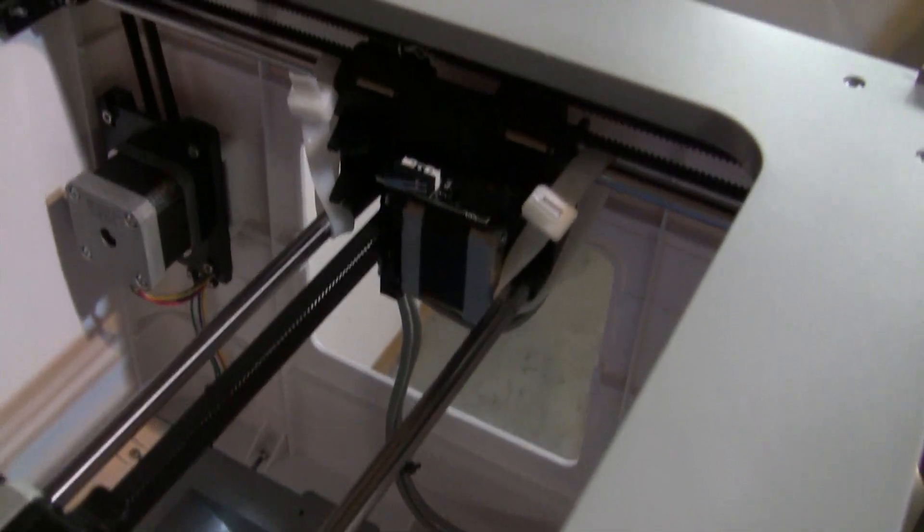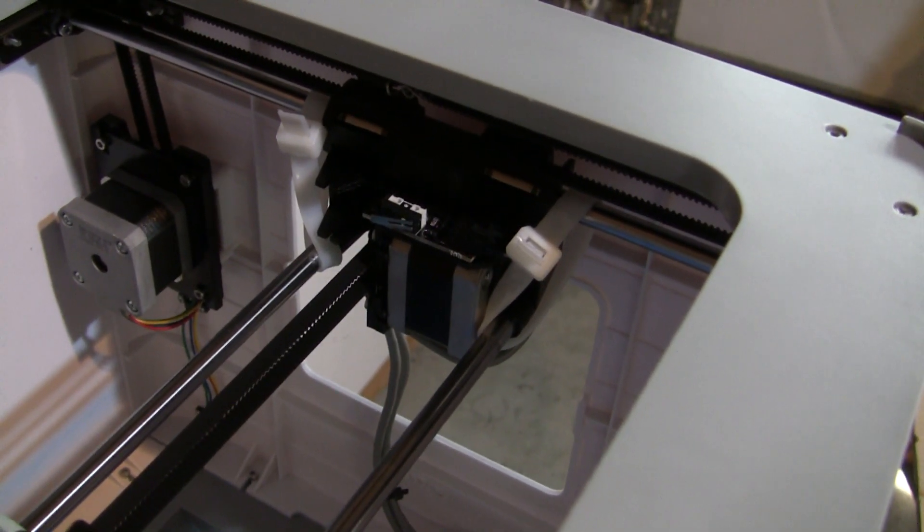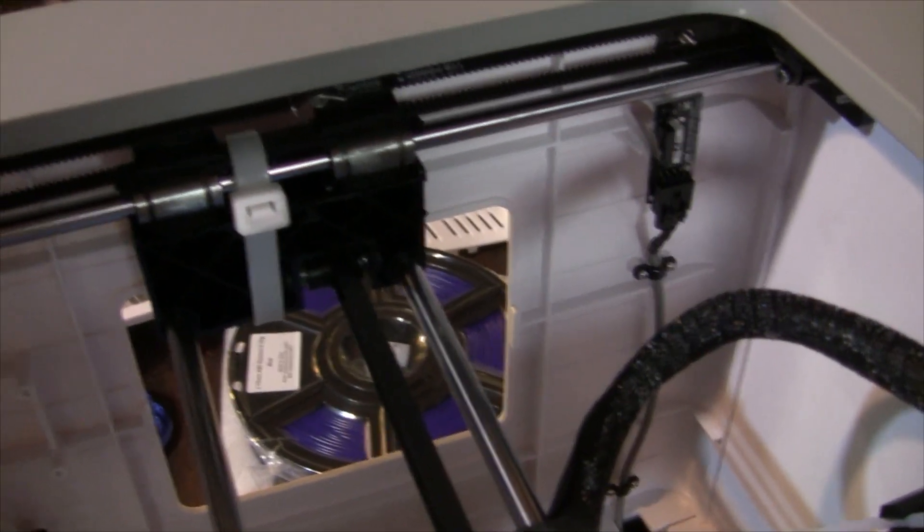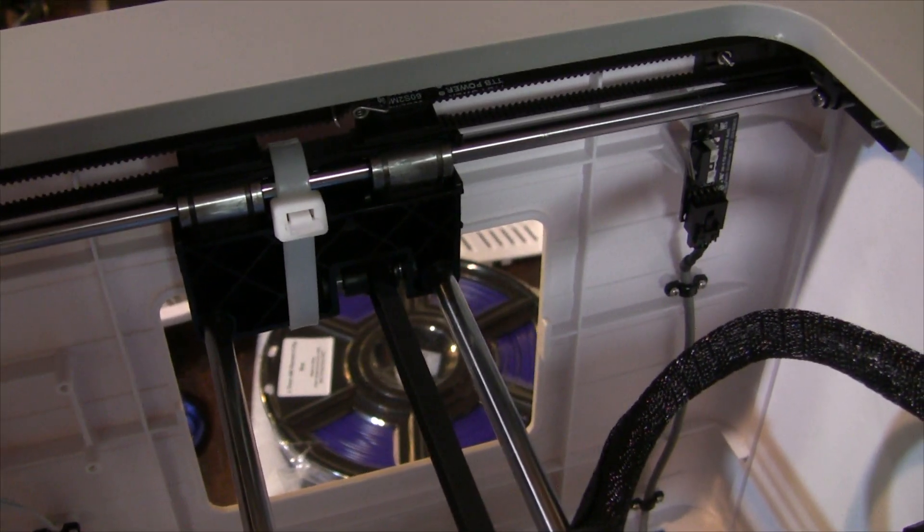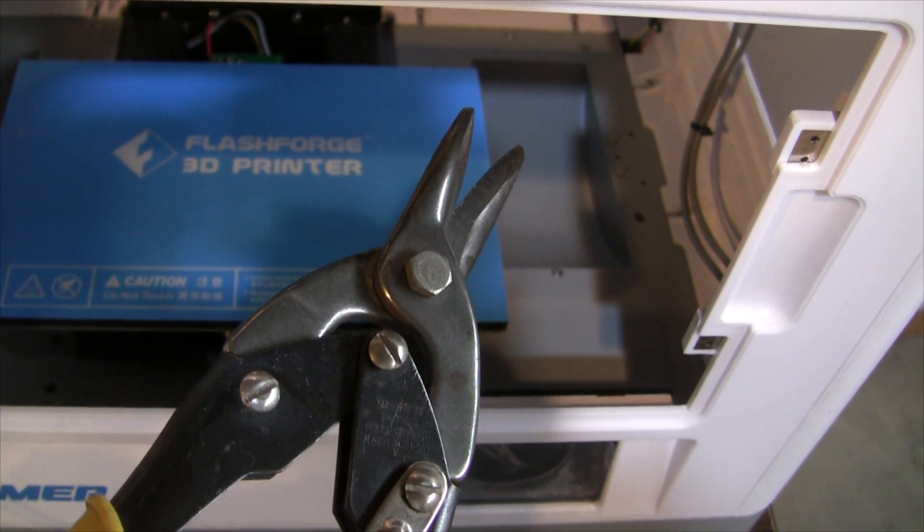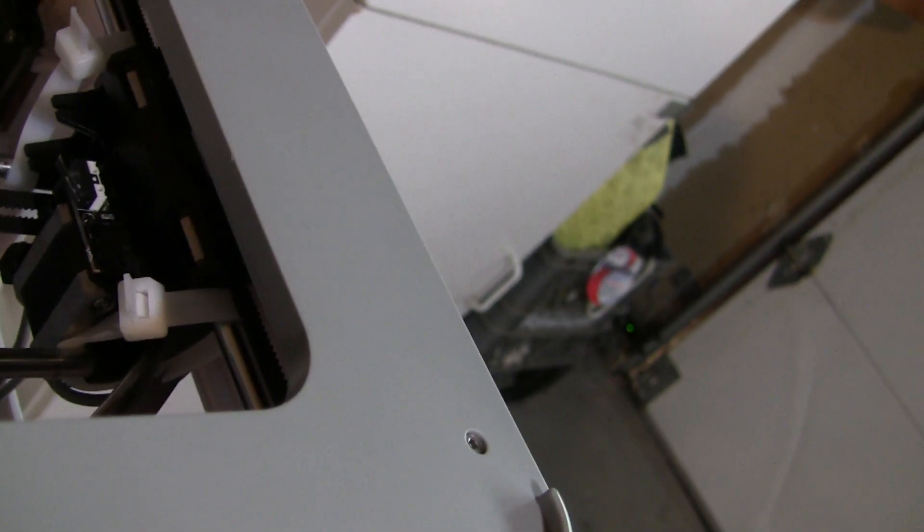One thing I didn't do yet is remove the zip ties. The quick start guide says there's four. There's actually only three. There's two on this side and one on this side. So I need to do that. These zip ties are really wide, so I'm using my tin snips to make short work of them. Just like that.